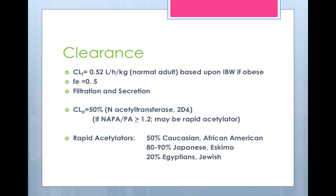One of the ways you can look at that is the formation of the metabolite. The metabolite formed by acetylation is called N-acetyl procainamide — or NAPA. It's not the wine-growing country in California, but you can remember it that way. As you can see here in parentheses, if the NAPA to procainamide ratio — which is the metabolite formed by N-acetyltransferase over the parent drug — is greater than 1.2, so you're making more NAPA than would be expected, that means you may be a rapid acetylator. So if your NAPA to procainamide ratio is greater than or equal to 1.2, then you may be a rapid acetylator.